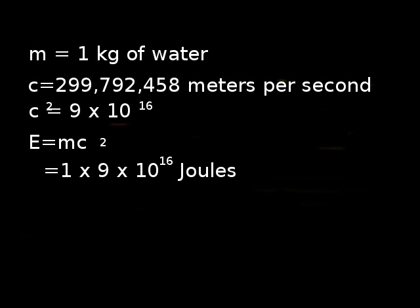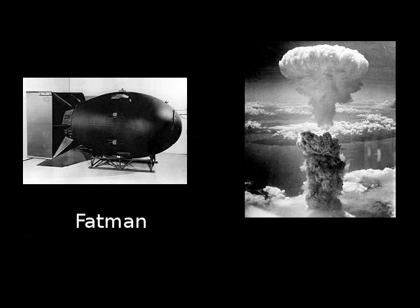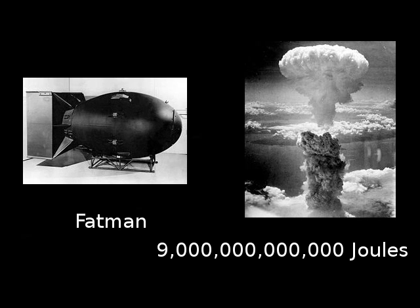As we had 1 kilogram, that means we get 9 followed by 16 zeros joules of energy. These numbers are kind of meaningless without an example. So let's consider Fat Man, the bomb that was dropped on Nagasaki. It had about 9 trillion joules, about 9 followed by 12 zeros. So we need 10,000 of them to match 1 liter bottle of water.